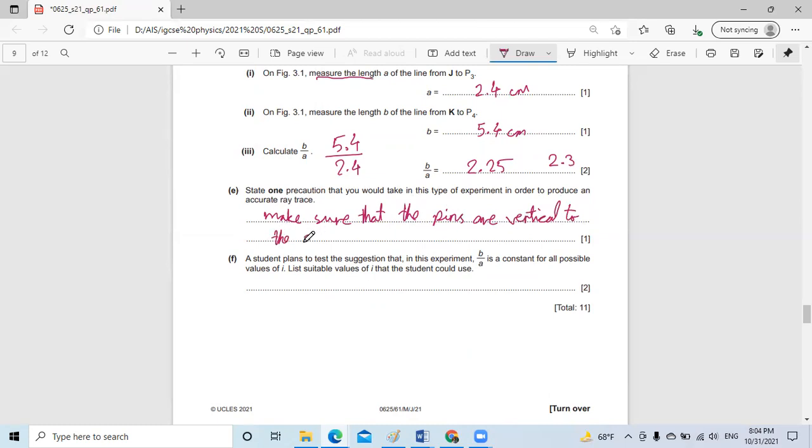So we can see that behind each other. Then what they ask here: a student plans to test the suggestion that in this experiment, B over A is a constant for all possible values of I. List possible values for I that the student could use. So I can do that several times—I can do at least four or five values—and they have to be bigger than 30 degrees as they started.